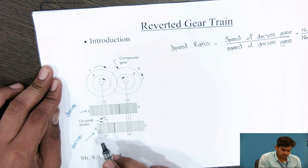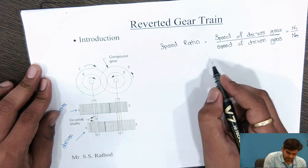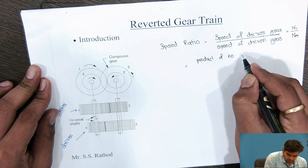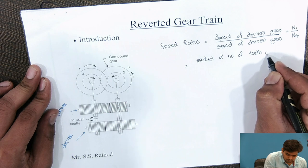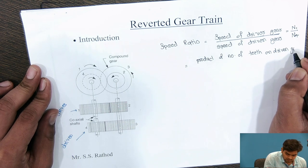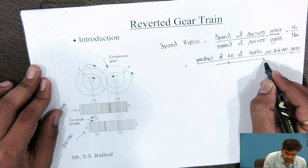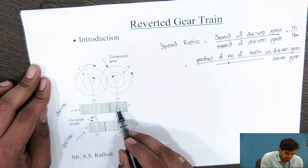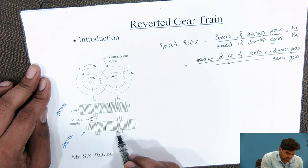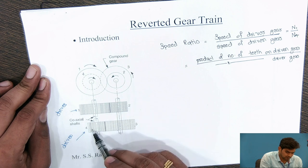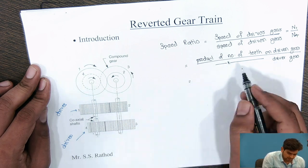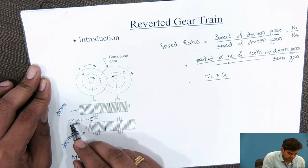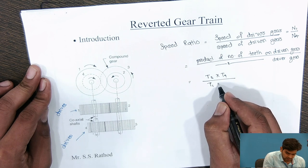It is also a kind of compound reverted gear train. We can find out the speed ratio in terms of the number of teeth: it is equal to the product of the number of teeth on the driven gears divided by the product of the number of teeth on the driver gears. Observing the mechanism, gears 1 and 3 are the driver gears for driven gears 2 and 4.